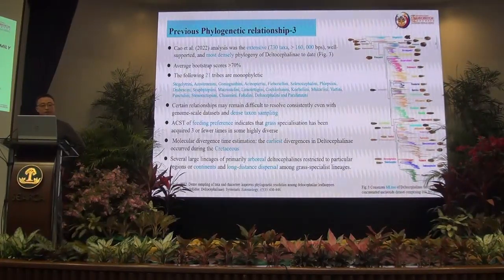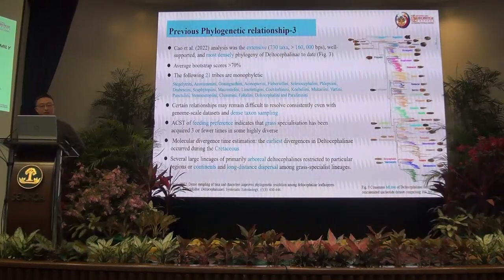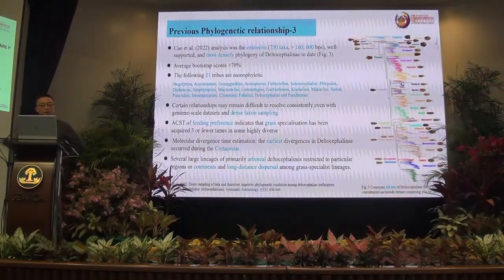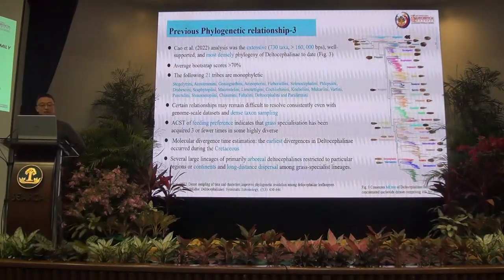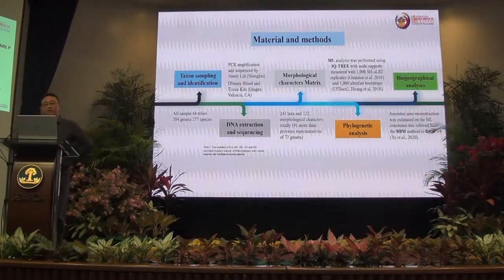Thirteen relationships may become difficult to resolve consistently even with economic scale datasets and dense taxon sampling. Ancestral state or founding preference indicates that grass specialization has been acquired three or fewer times in some highly diverse lineages. Molecular divergence time estimation shows the earliest divergence of Deltocephalinae occurs during the Cretaceous. Several large lineages of primarily boreal Deltocephalinae are restricted to particular regions or continents, with long-distance dispersal among specialist lineages.